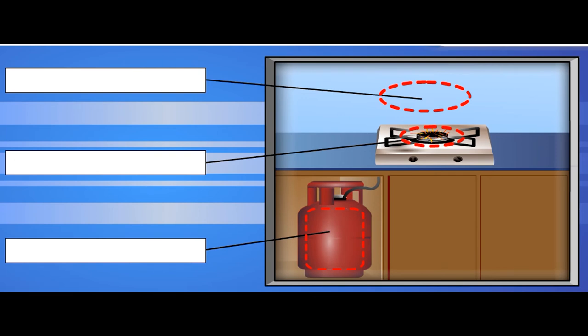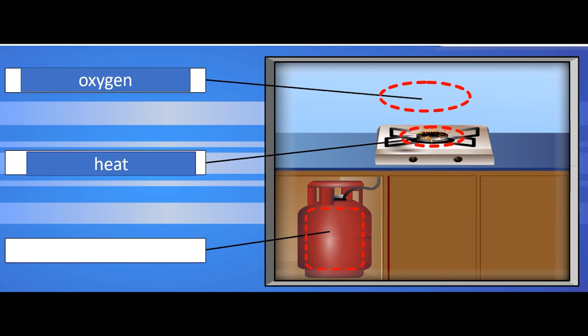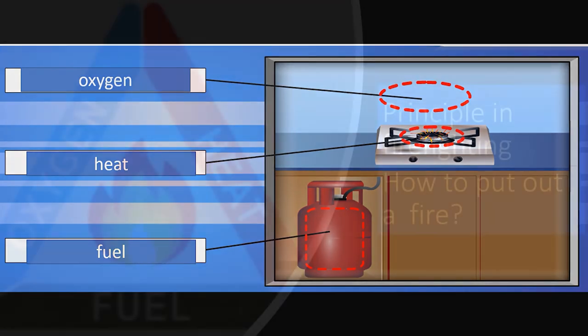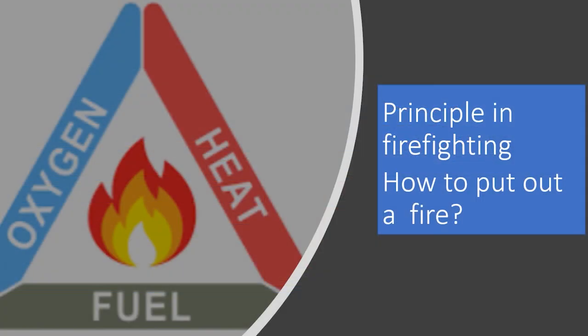Look at the gas stove in your kitchen. To start a fire you need oxygen, heat, and fuel. So all together, there are three conditions needed for combustion. How do you put out a fire?